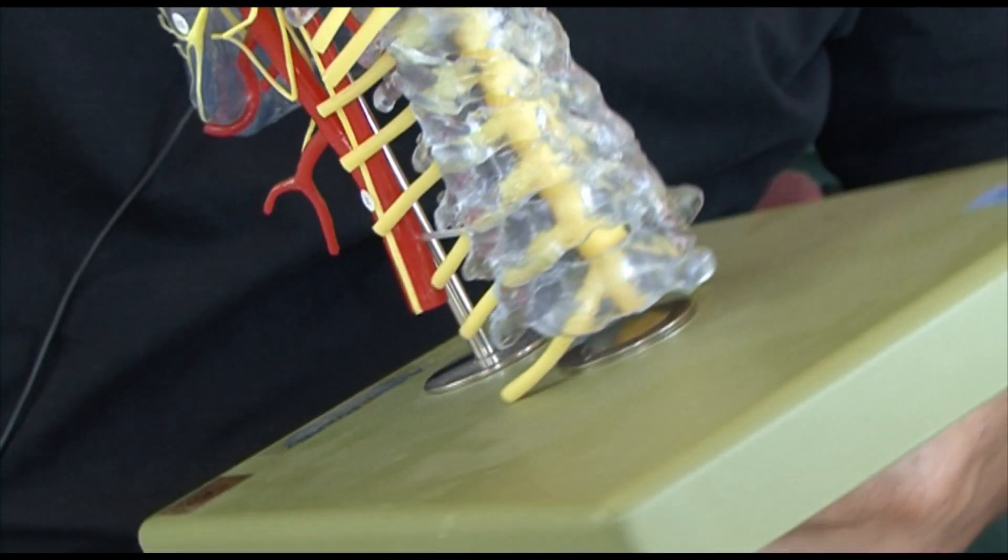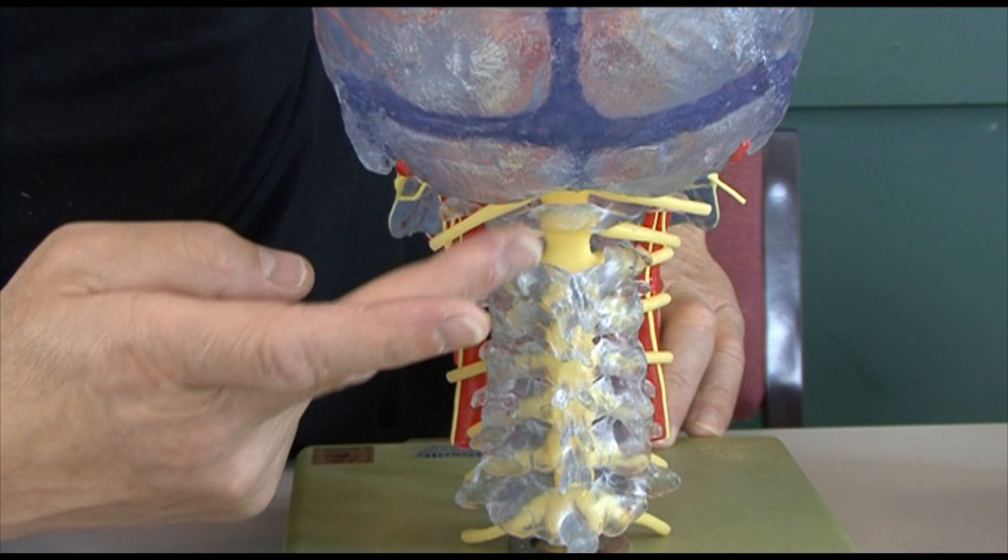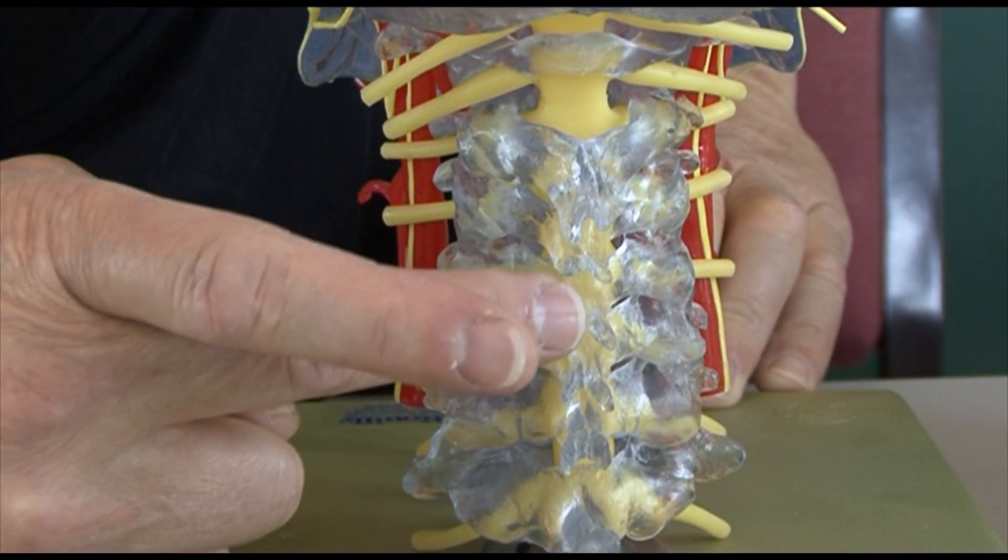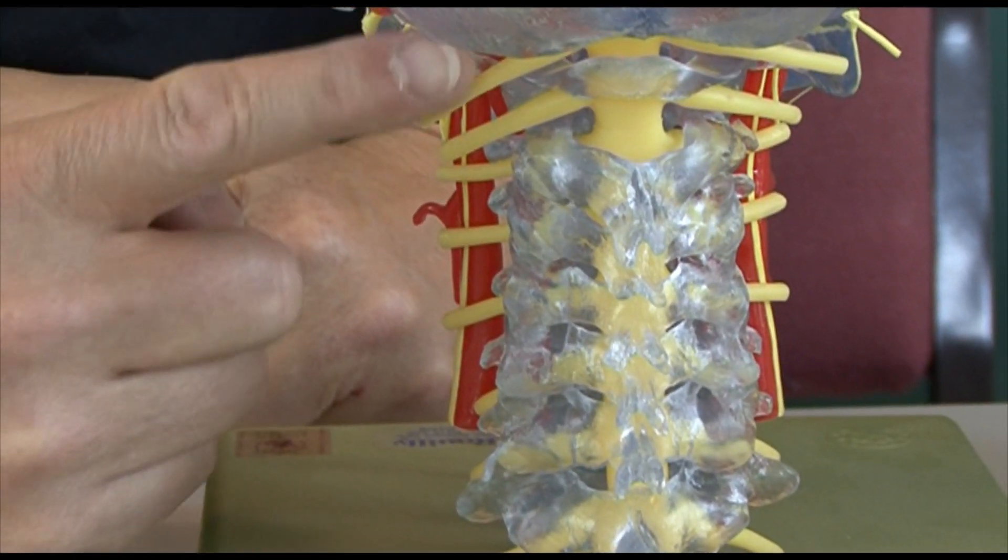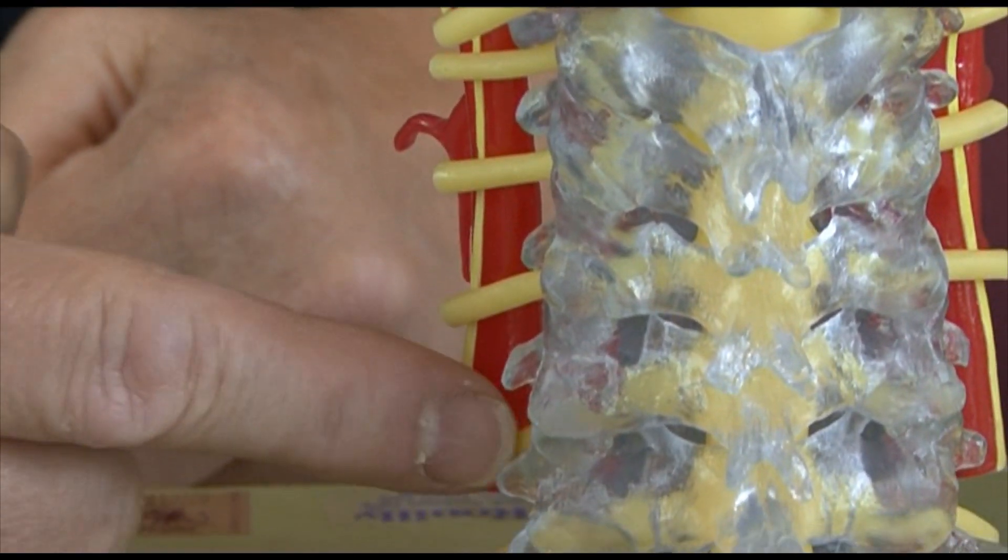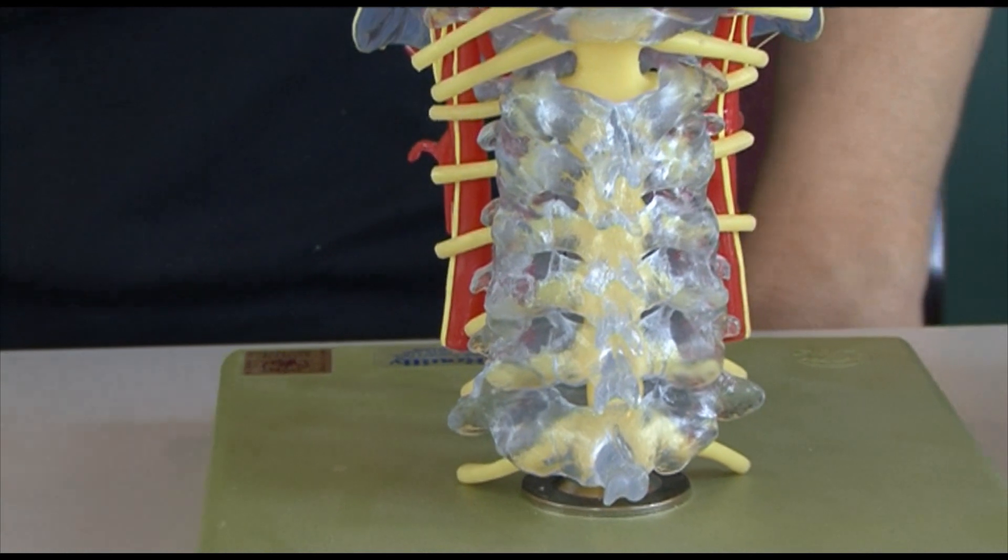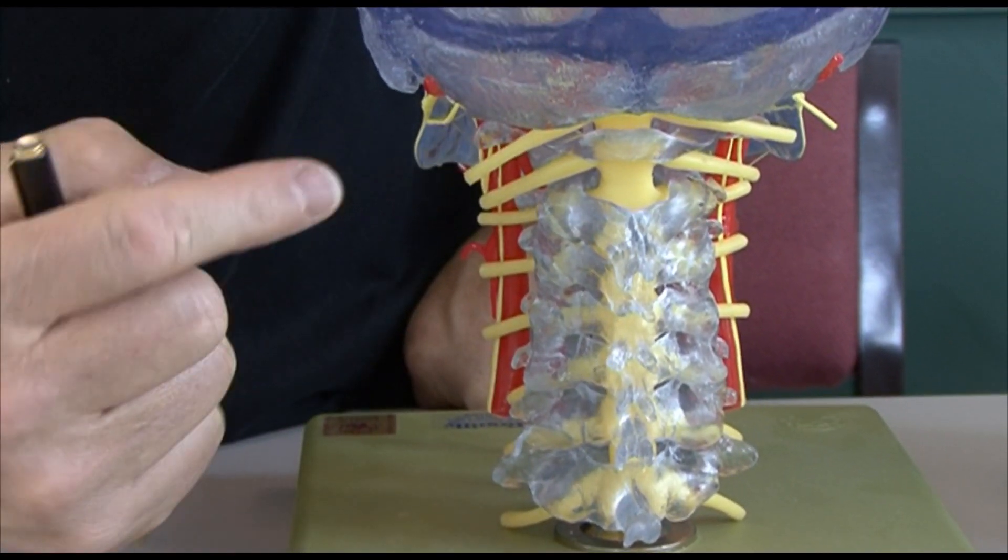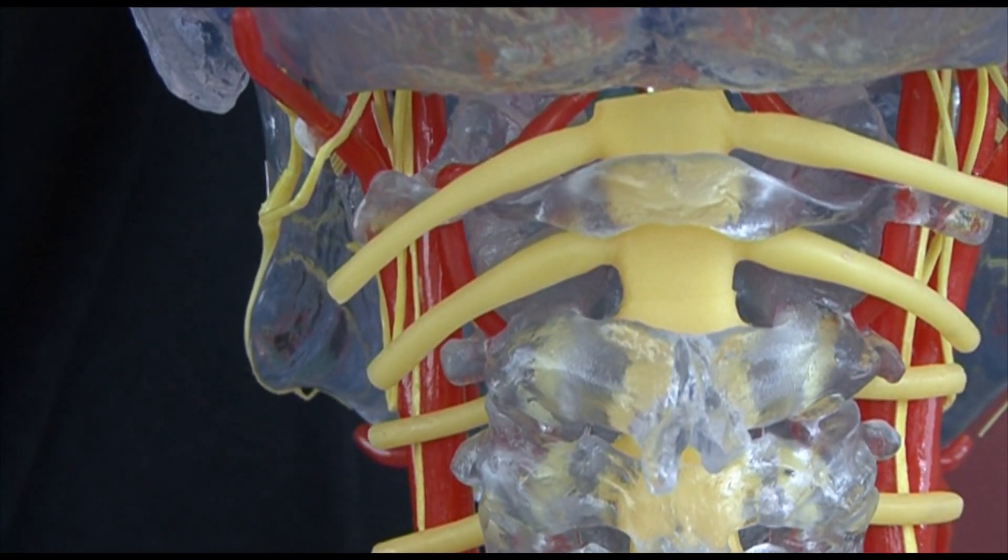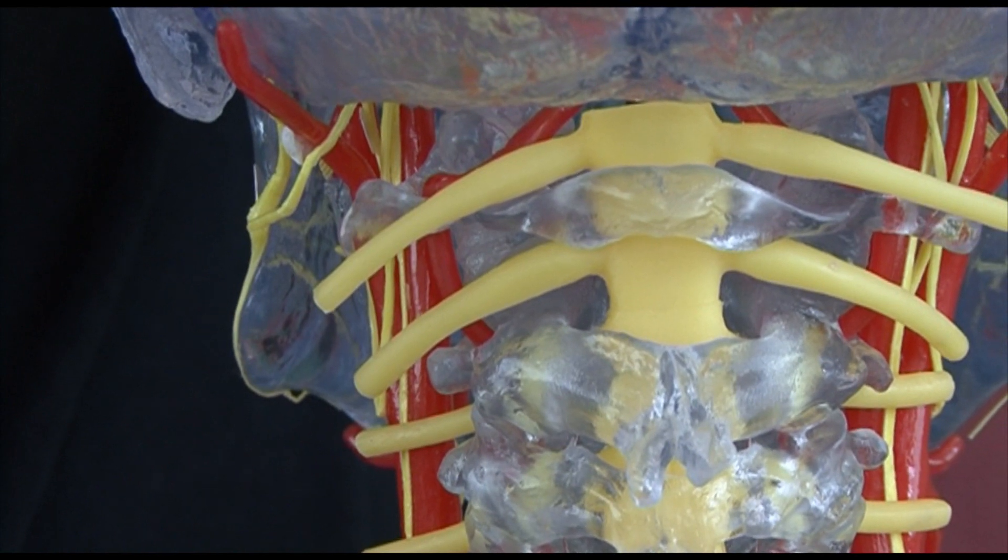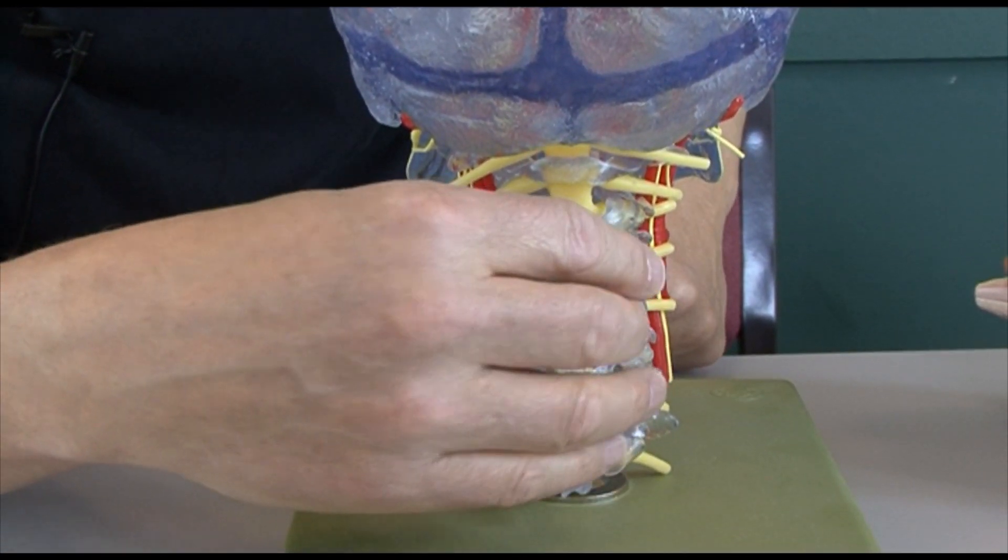If we go around to look at the back of this model, we can see the vertebrae - these are the cervical vertebrae: one, two, three, four, five, six, and seven. These are the cervical nerves: one, two, three, four, five, six, seven, and eight. It's interesting to note that there are seven cervical vertebrae but eight cervical nerves. That's because the first cervical nerve is on top - it's on top of the first cervical vertebrae.